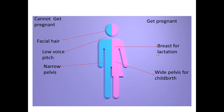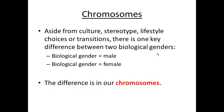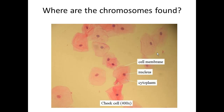But how is it possible that females and males are biologically different? Aside from cultural stereotypes, lifestyle choices, or transition, there is one key difference between the two biological genders. The key difference between being biologically female or male is due to our chromosomes. Chromosomes are the way DNA is packaged in the nucleus of every cell.